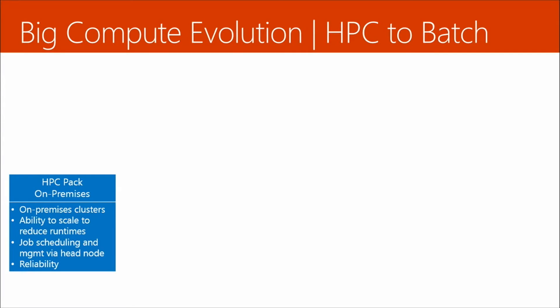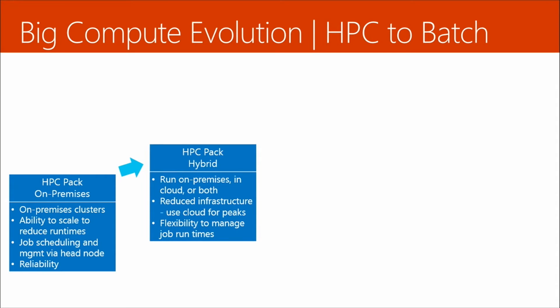Let's take a look at the evolution of where we've been to where we're going. We start off with on-premises, where we can have clusters, scale them to reduce run times, and do scheduling. The next evolution is the HPC Pack hybrid — we run on-premises, in the cloud, or both. This is getting us into the cloud with a little integration going on.